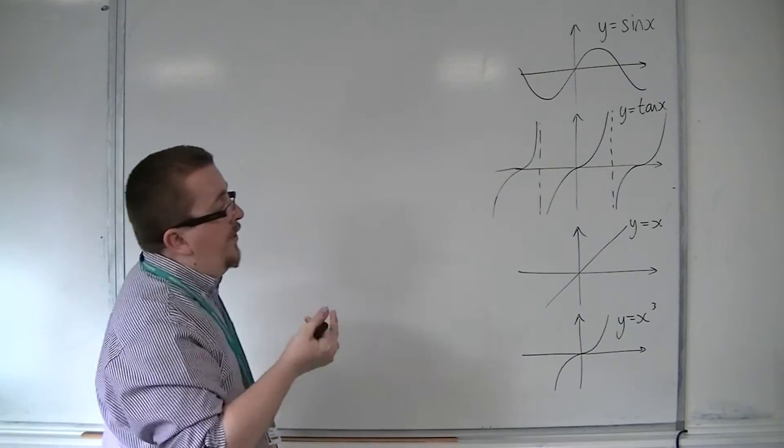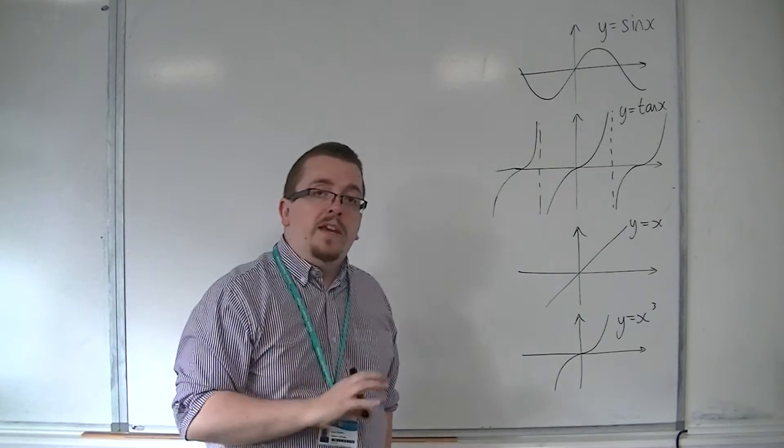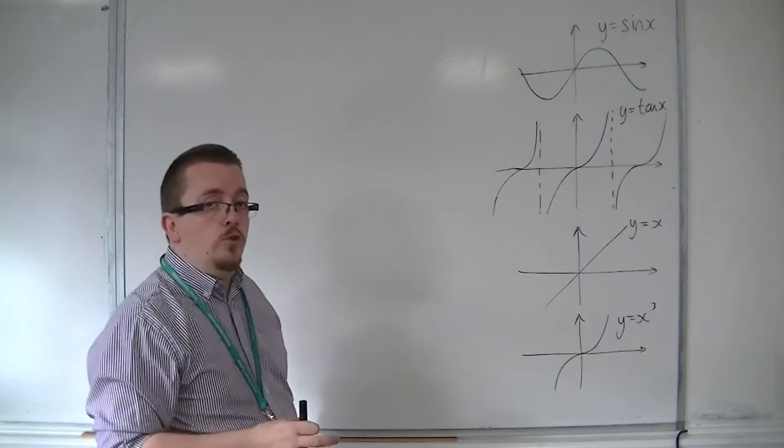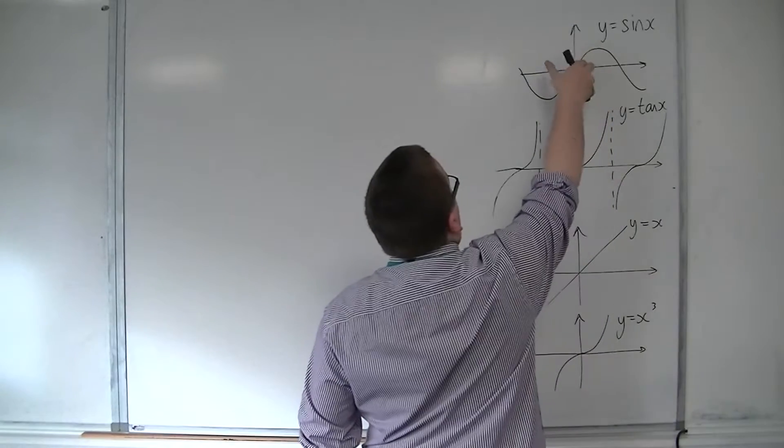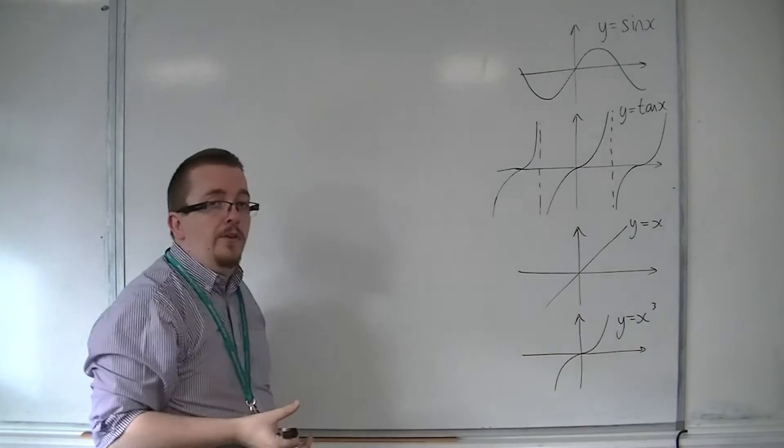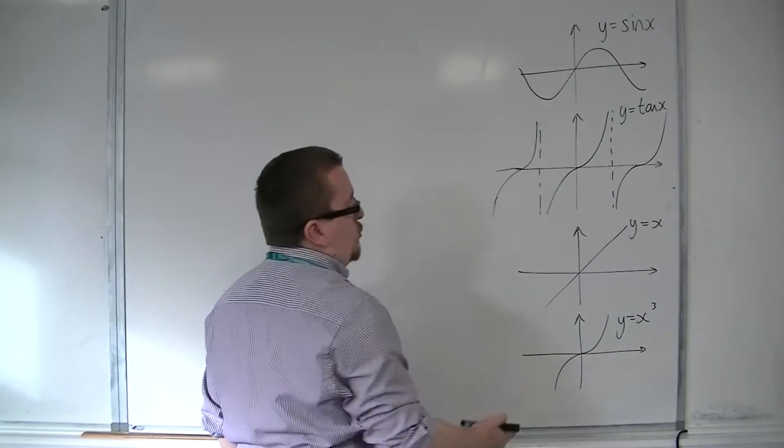They are all rotations of themselves in the origin by 180 degrees. So if you rotated this shape in the origin 180 degrees, it would map onto itself, and it would be the same for each of these.